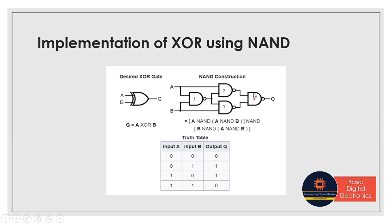Next, we will see the XOR gate. To construct an XOR gate using NAND gate, we need four NAND gates. The first NAND gate takes inputs A and B. Input A also goes to the second NAND gate, and input B also goes to the third NAND gate. The output from NAND gate 1 is fed into both NAND gate 2 and NAND gate 3. The outputs of NAND gate 2 and NAND gate 3 are given into NAND gate 4. That's how the XOR gate functionality is achieved using NAND gates.